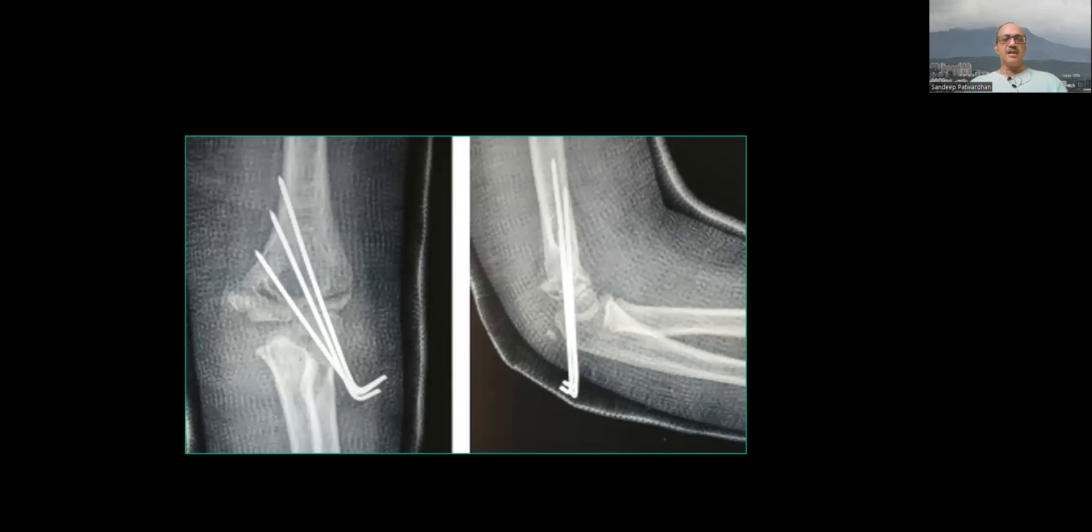So then the wire is removed and then you complete your pinning. So use the olecranon and distal fragment as a lever, put an intramedullary wire and reduce it and then put two pins.